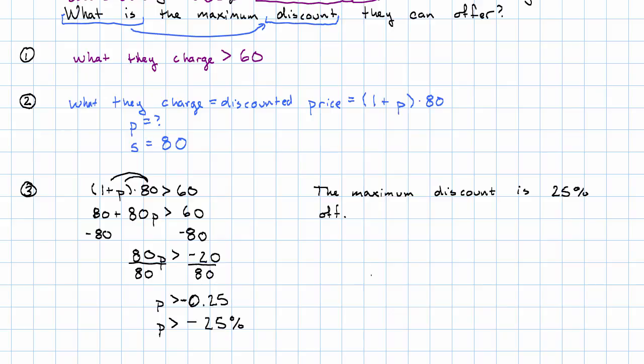And what we're thinking is, bigger discounts, like 30% off, represent numbers that are more negative. So, for example, if we put negative 30% in for P, the inequality would be false.